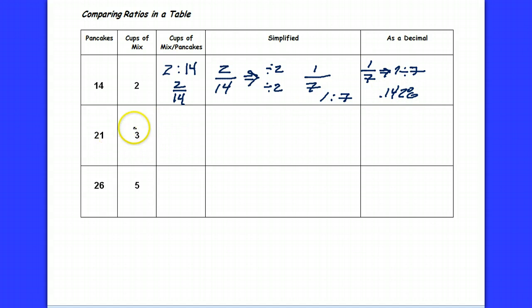Let's see what we have with this next ratio. My friend tells me that they like to make 21 pancakes, and according to their calculations the correct mixture would be 3 cups of mix to 21 pancakes.